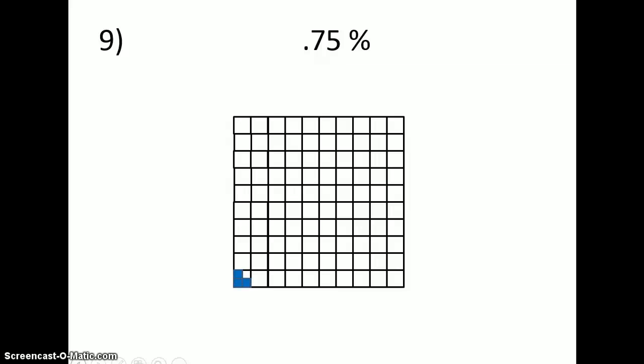Seventy-five hundredths, I can also think of as three-quarters out of a dollar. So, three-quarters percent, or three-fourths of one percent, and percent is out of a hundred. So, three-fourths out of a hundred squares would be shaded in.